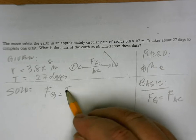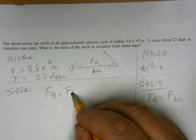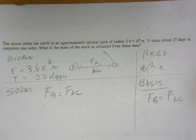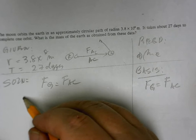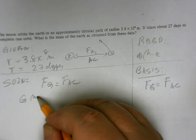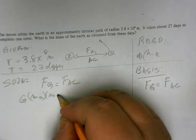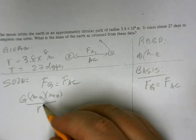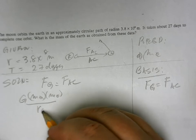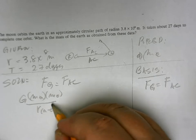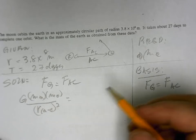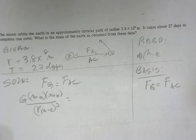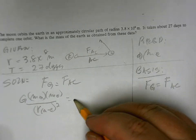FG is equal to FAC. And what is the formula for FG? It is G, M of the Moon times the M of the Earth divided by the R distance from the Moon to the Earth, and square that.